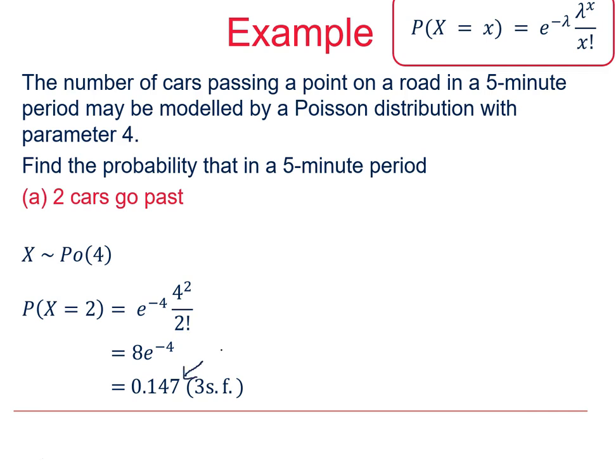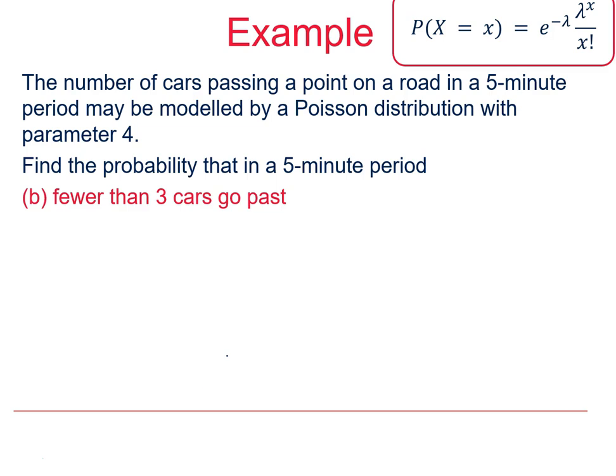The second part of this question is a bit more complicated. This time we want fewer than three cars going past, but still in that five-minute time period, so we're still using the fact that lambda equals 4. If we want fewer than three, we're talking 0, 1, or 2, so we actually have three probabilities to work out and add together. First, the probability that X is 0: e to the minus lambda multiplied by lambda to the 0 divided by 0 factorial. In fact, 4 to the 0 equals 1 and 0 factorial is defined as 1, so that just gives us e to the minus 4.